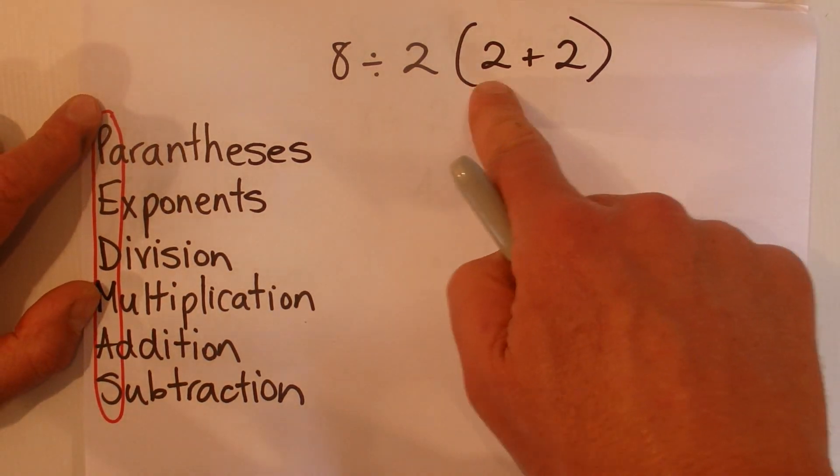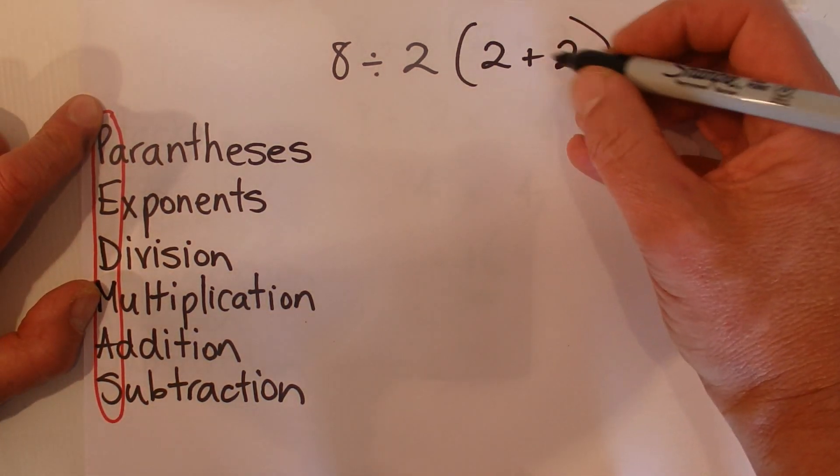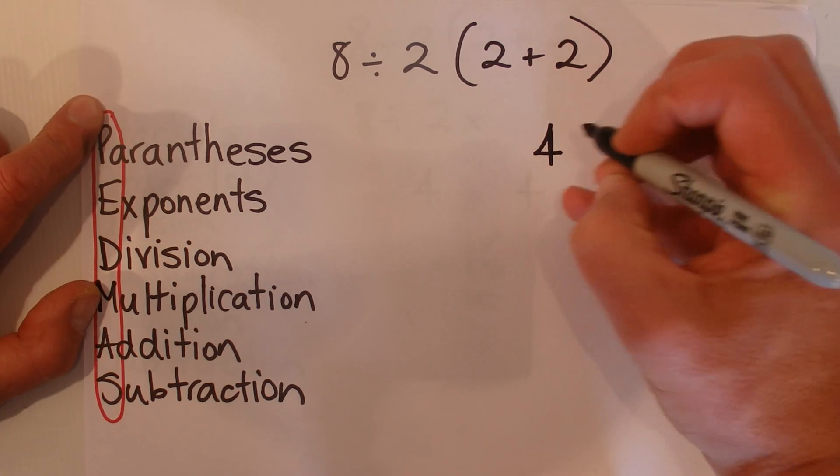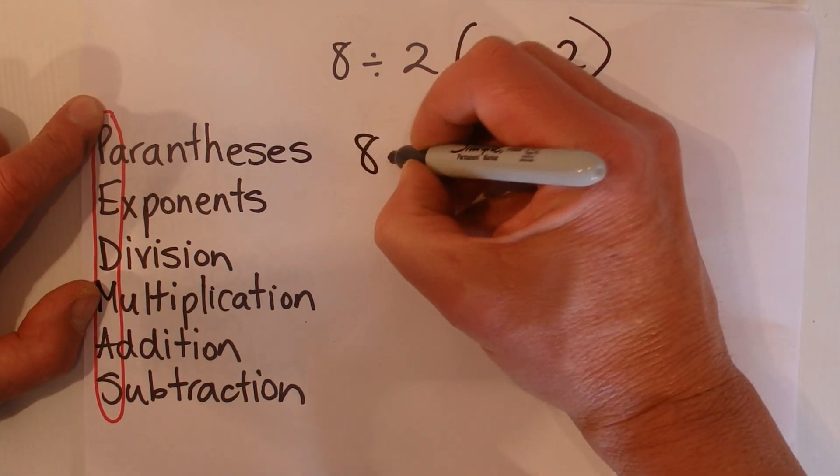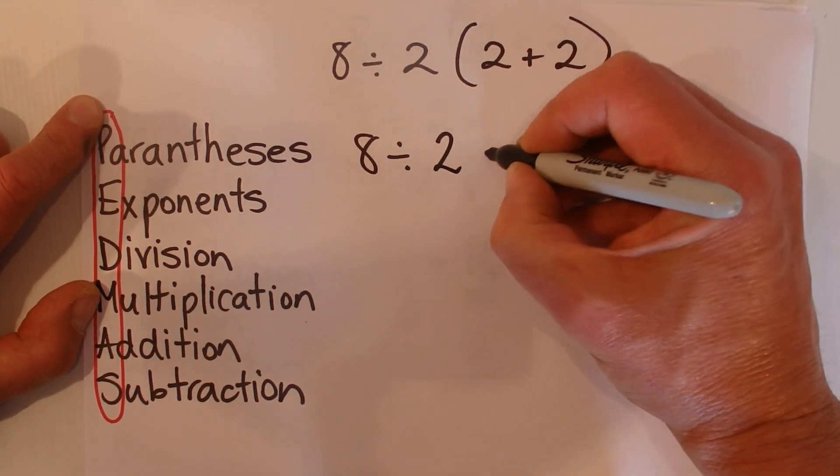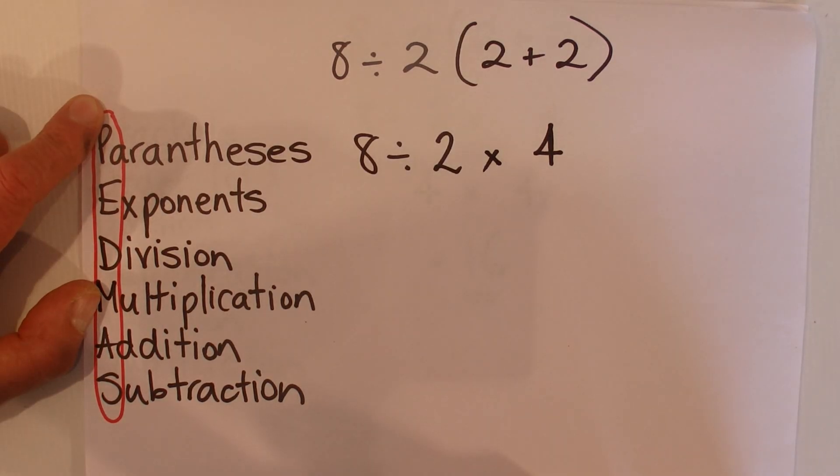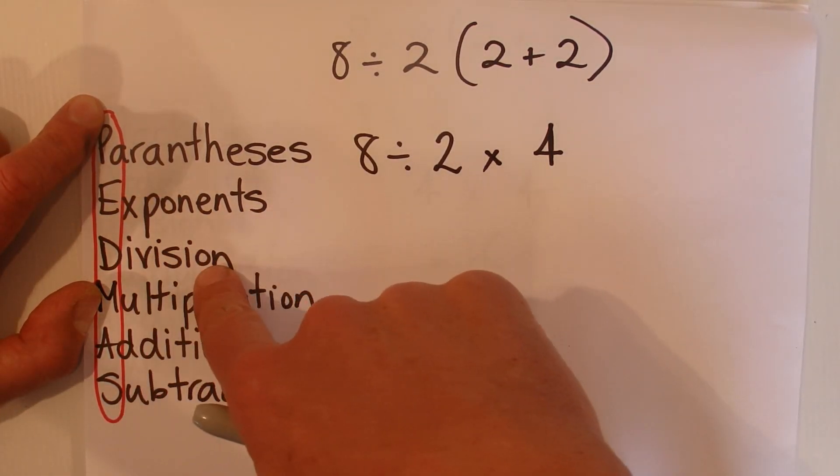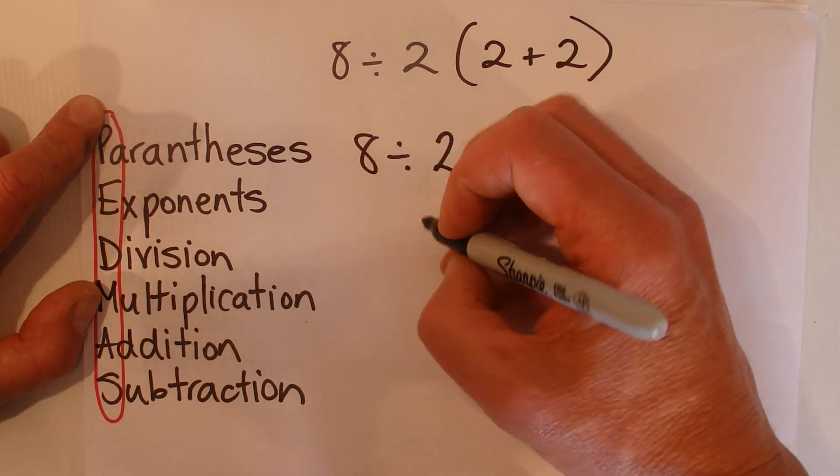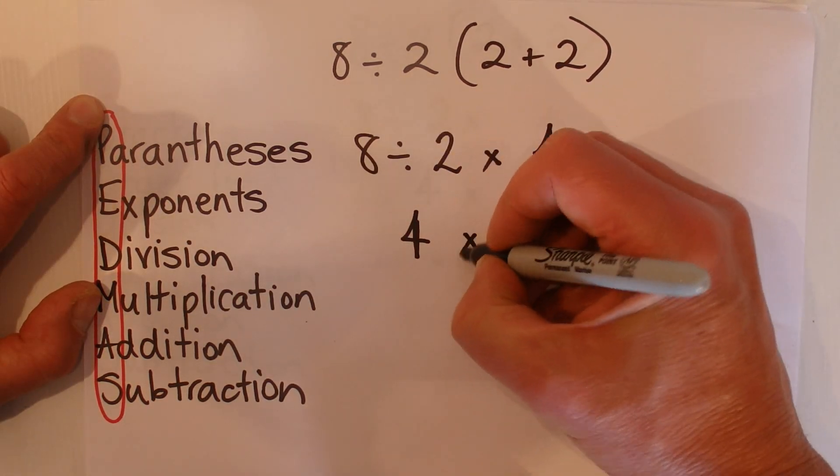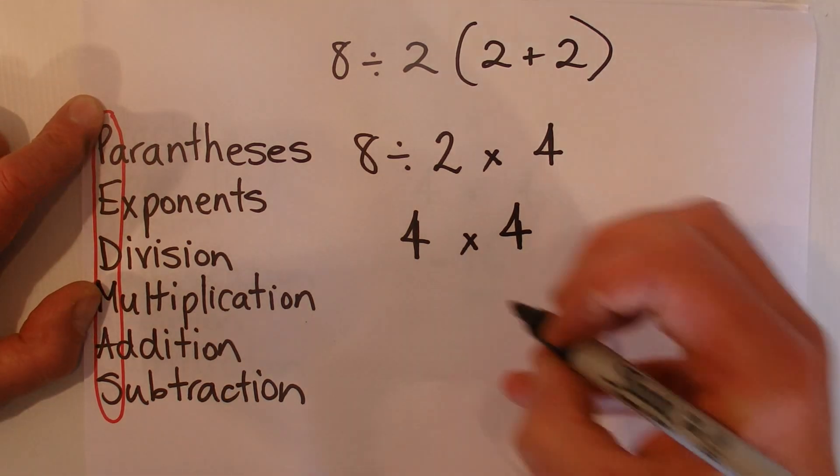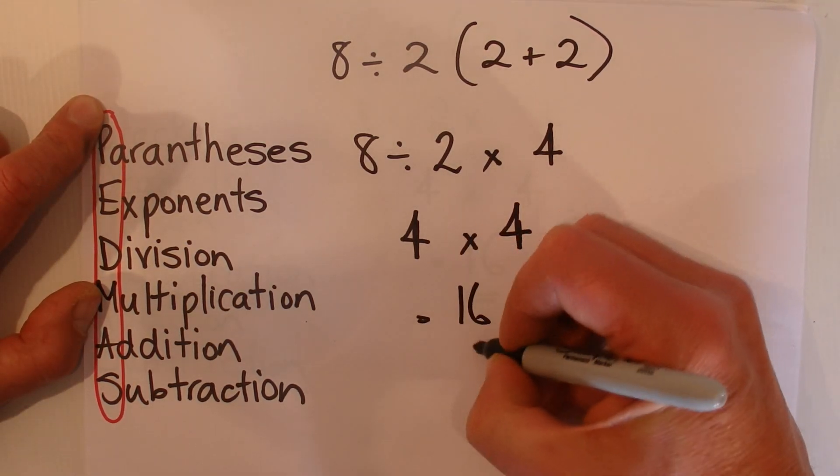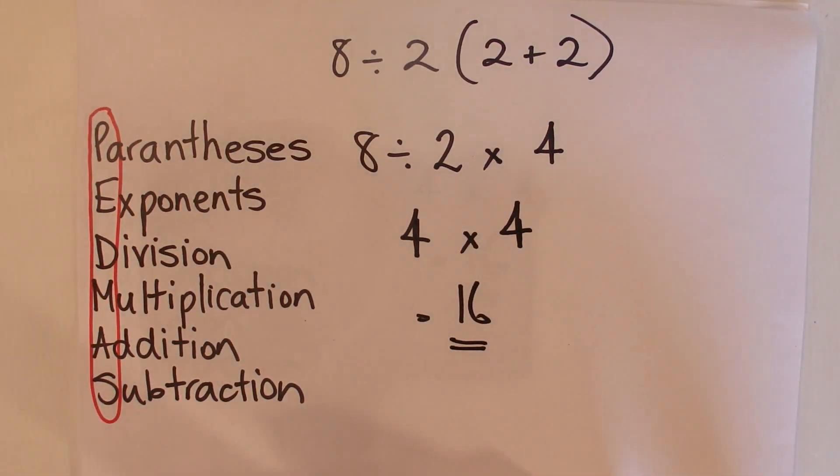You do everything that's in parentheses first, so 2 plus 2 is 4, and then it's 8 divided by 2 times 4. There's nothing to the power of or no exponents, so you do your division next. 8 divided by 2 is 4, and 4 times 4 equals 16.